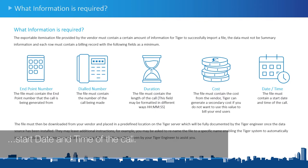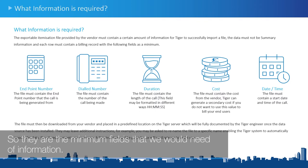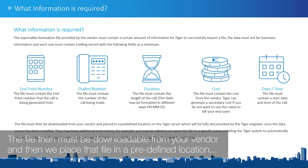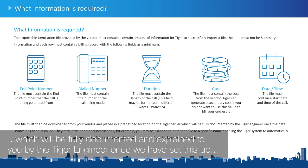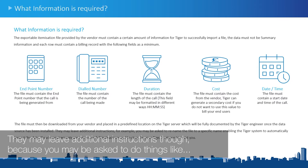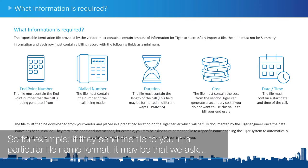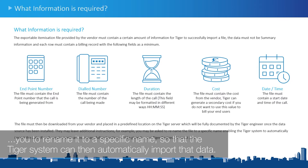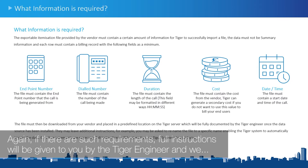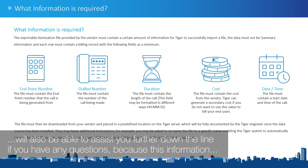The file must also contain a start date and time of the call. Those are the minimum fields required. The file must be downloadable from your vendor, and you then place that file in a predefined location, which will be fully documented and explained by the Tiger engineer when we set this up for you. They may leave additional instructions, such as renaming the file to a specific file name so that the Tiger system can automatically import the data. Full instructions will be given by the Tiger engineer, and this information will be documented.